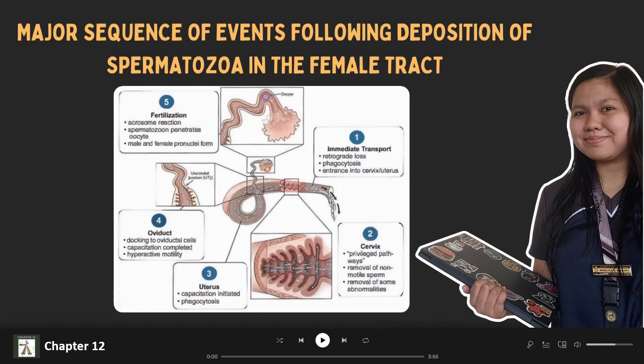First, we will talk about the major sequence of events following the deposition of spermatozoa in the female tract. We have five major sequences, namely: immediate transport, cervix, uterus, oviduct, and fertilization.